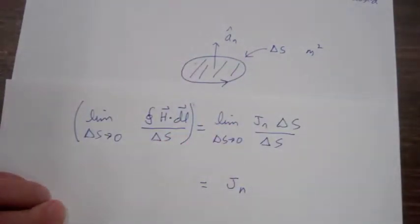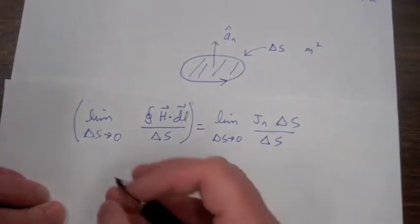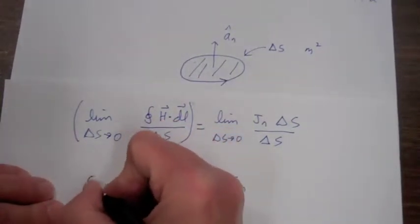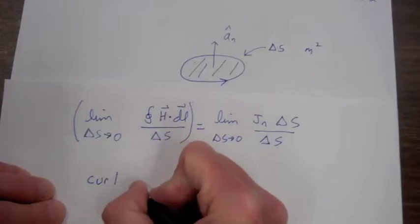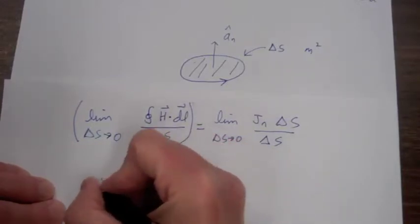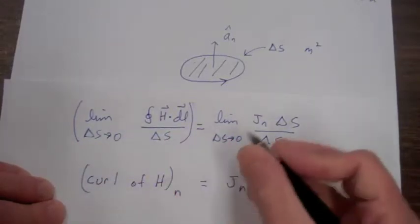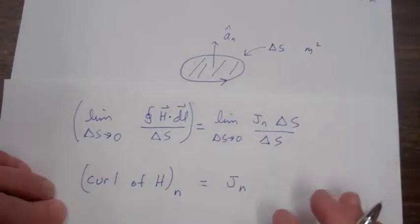The right hand side just becomes the current density in the direction of our unit vector a sub n. The left hand side becomes the component of the curl of H in the direction of our unit vector a sub n.